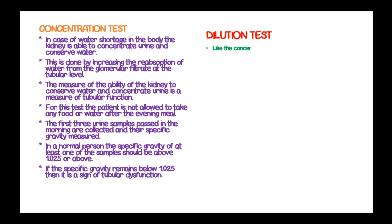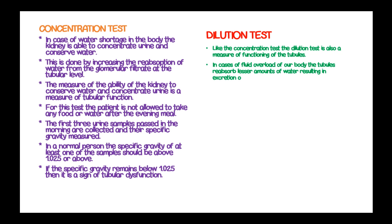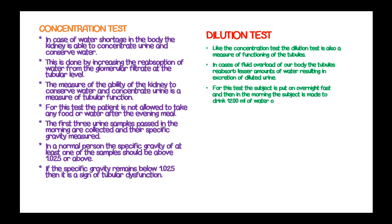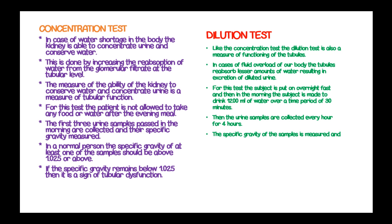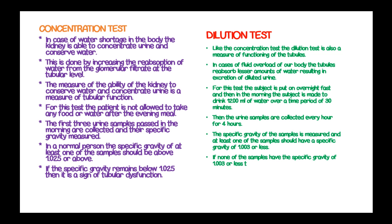The dilution test is also a measure of tubular function. In a case of fluid overload, the tubules reabsorb less water, resulting in excretion of diluted urine. For this test, the subject undergoes an overnight fast, then in the morning drinks 1,200 ml of water over a period of 30 minutes. Urine samples are then collected every half hour for 4 hours. The specific gravity is measured, and at least one of the samples should have a specific gravity of 1.003 or less. If none of the samples reach 1.003 or less, this is a sign of tubular dysfunction.